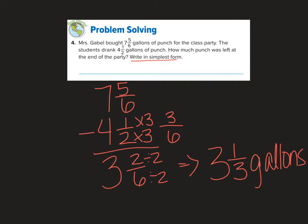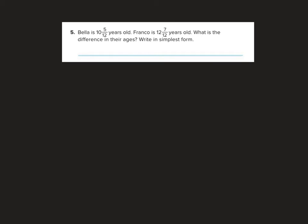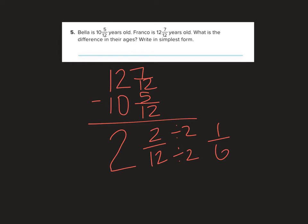Okie dokie, let's move on. Bella is 10 and 5 twelfths years old. Uh-oh, I shouldn't have written it down already. Franco is 12 and 7 twelfths years old. What is the difference in their ages? So can't take 10 and subtract 12, got to flip them around. Difference means subtracting, right? So I need to do 12 and 7 twelfths minus 10 and 5 twelfths. 7 twelfths minus 5 twelfths is 2 twelfths. 12 minus 10 is 2. To simplify, so my answer is 2 and 1 sixth years older. That's the difference in their ages anyways.